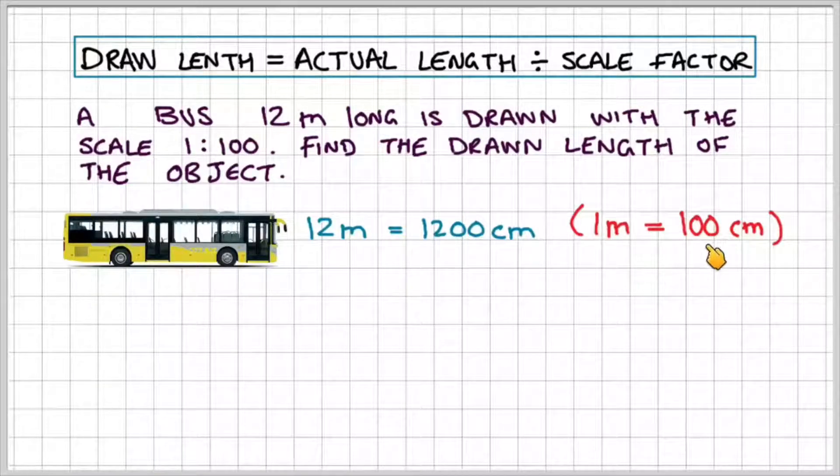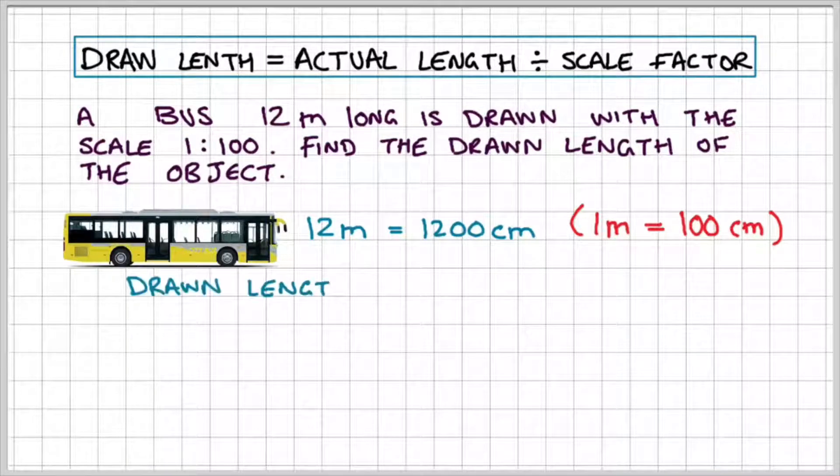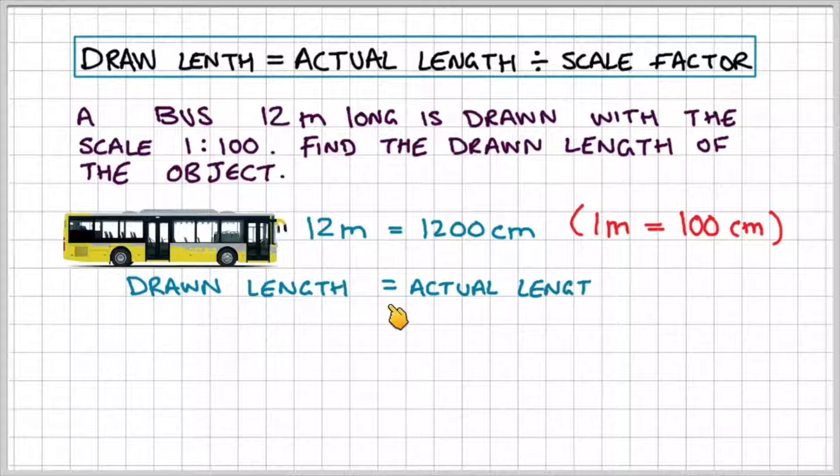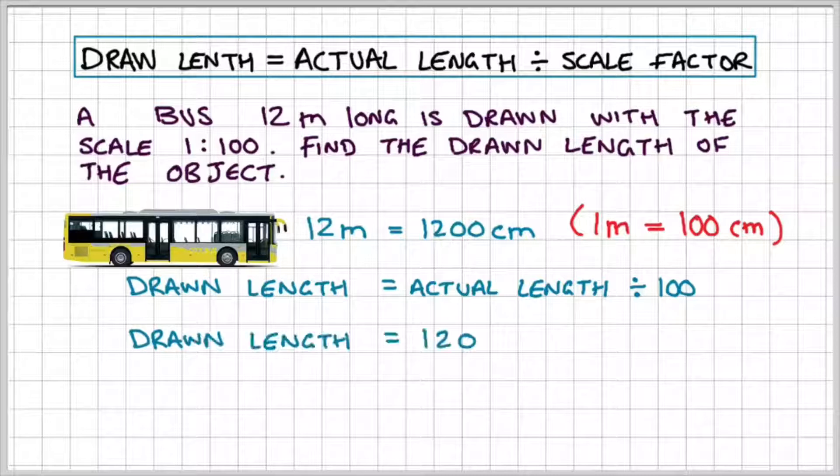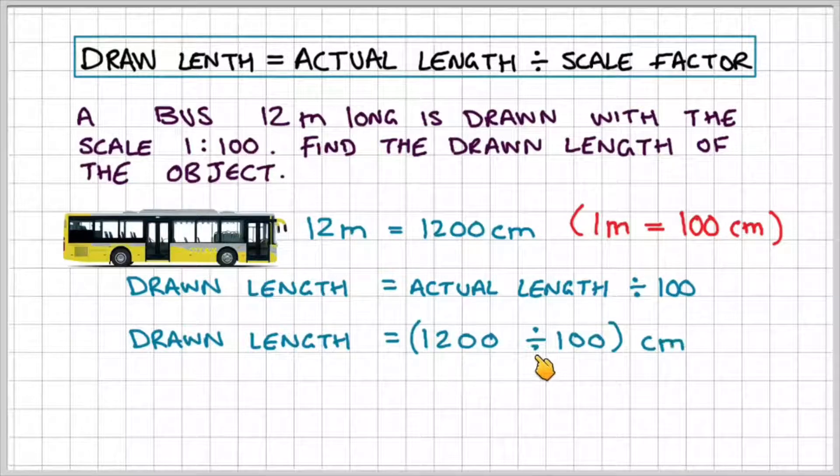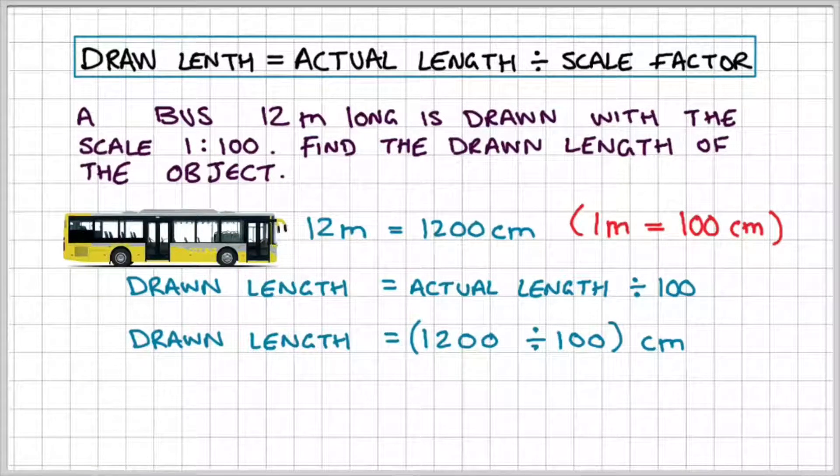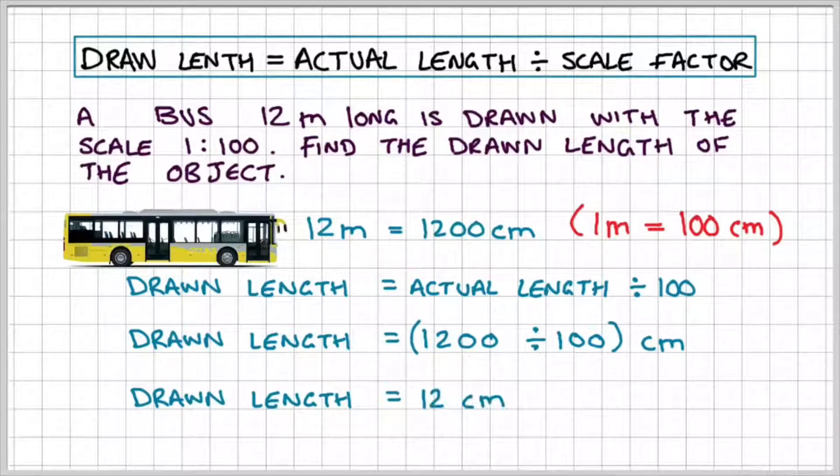We know that one meter is equal to 100 centimeters and we can use that to convert 12 meters to 1200 centimeters. So we're going to use the formula drawn length is equal to actual length divided by the scale factor. Now we know that our scale factor is 100. So the drawn length is equal to 1200 divided by 100. That's going to give us centimeters which equals 12 centimeters.